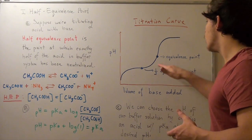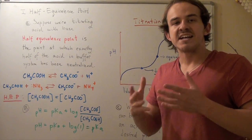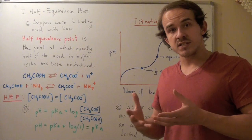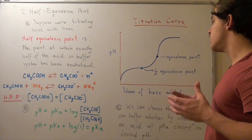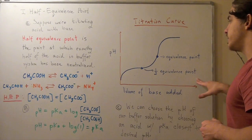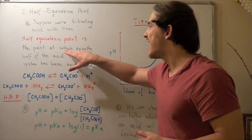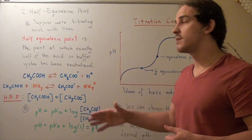Now we've defined the equivalence point to be the point at which all the acid has been neutralized. So every single molecule of acid in our buffer system has been neutralized. Now we can also define something called the half-equivalence point. And the half-equivalence point is the point at which exactly half of the acid in our buffer system has been neutralized.